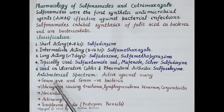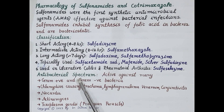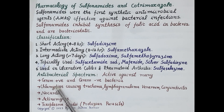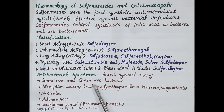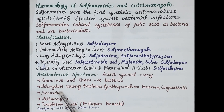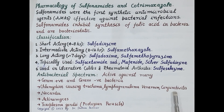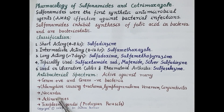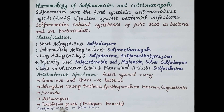Now let's look at the antibacterial spectrum of sulfonamides. Sulfonamides are bacteriostatic against mainly gram-positive bacteria and gram-negative bacteria. They are also active against Chlamydia causing eye infections like trachoma and conjunctivitis, Chlamydia causing the sexually transmitted disease lymphogranuloma venereum. These are also effective against Nocardia, Actinomyces, and the protozoan parasite Toxoplasma gondii.